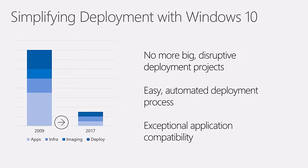That brings us to the biggest change overall: how do you change the way you deploy this? Doing the traditional deployment project every three to five years and now trying to do it every six months doesn't work. You had to change the process so that this becomes as automated as possible, as easy as possible, and as low cost as possible. If we're going to go from deploying once every five years to twice per year, that's 10 times as fast. In order to deploy 10 times as fast, you need to deploy at about one-tenth of the cost. We need to shrink big components of a deployment process — including app testing, infrastructure updates, image creation, and the deployment process itself — down to something much more manageable.